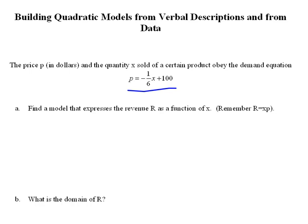Our problem here says find a model that expresses the revenue R as a function of X. And then it says remember that R equals X times P. We may or may not remember this, but revenue equals quantity times price. So if we know that revenue equals quantity times price, we're supposed to be expressing the revenue R as a function of X. So looking at that in function notation, it would look like this.